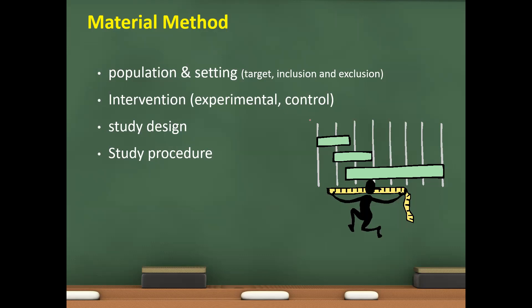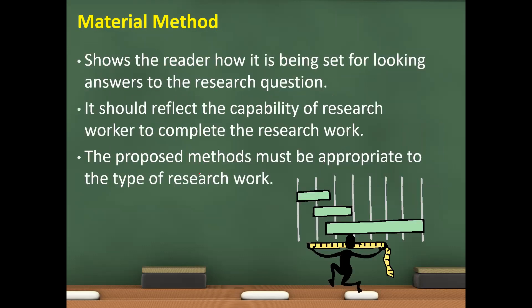Intervention: experimental, control. Study design, study procedure. So, show the reader how it's being set for looking and answer to the research question. It should reflect the capacity, capability of research worker to complete the research work. The proposed method must be appropriate for the type of research work.